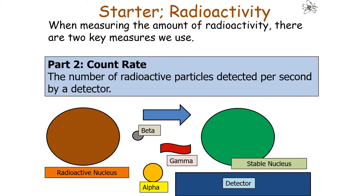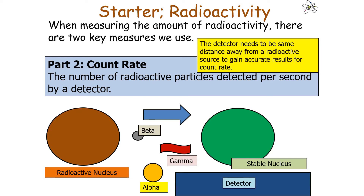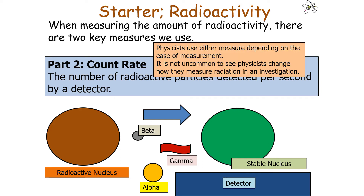The second key measure is count rate: the number of radioactive particles of either alpha, beta, or gamma detected per second by a detector. Count rate is measured in per second, and the detector needs to be the same distance from a radioactive source to gain accurate results.